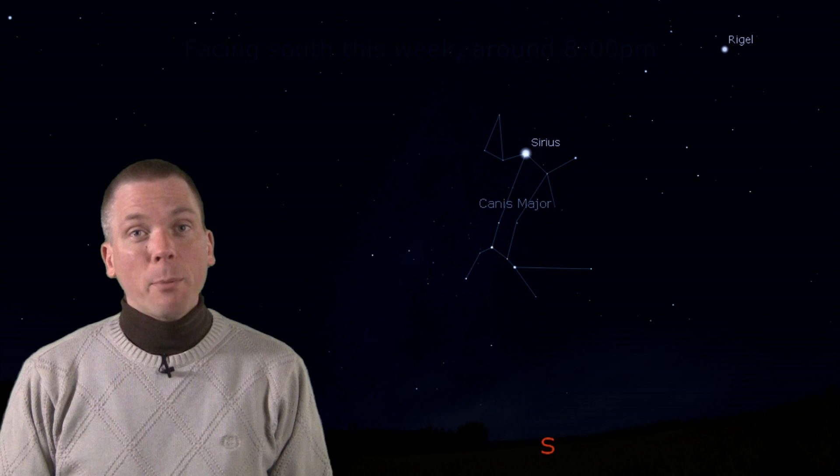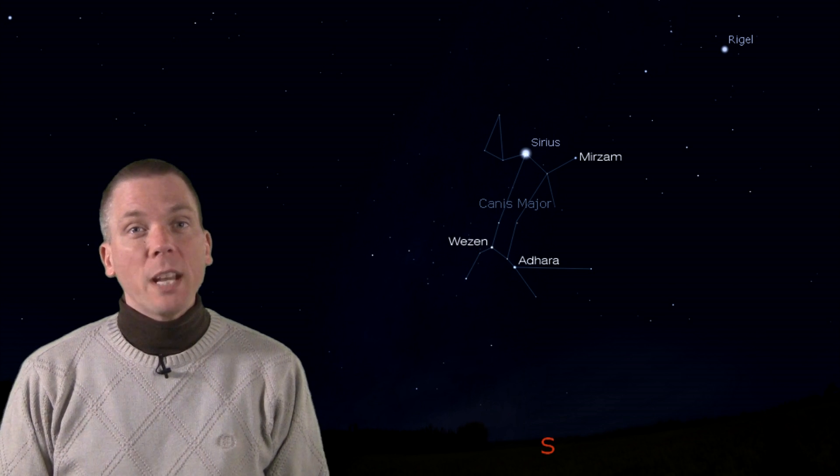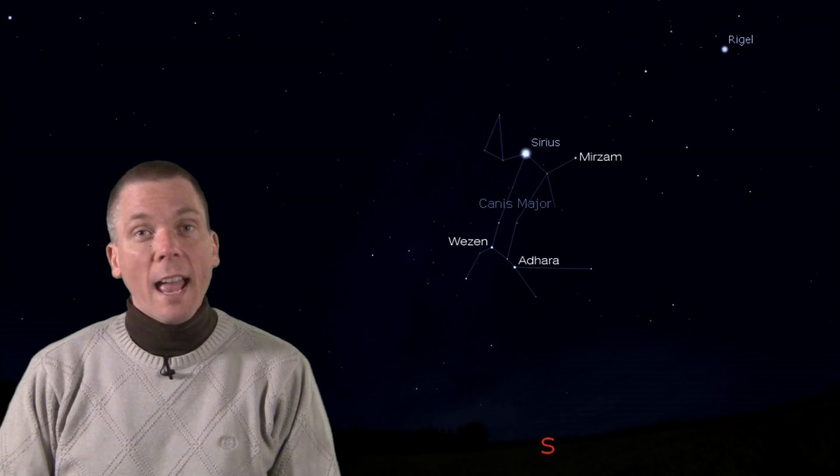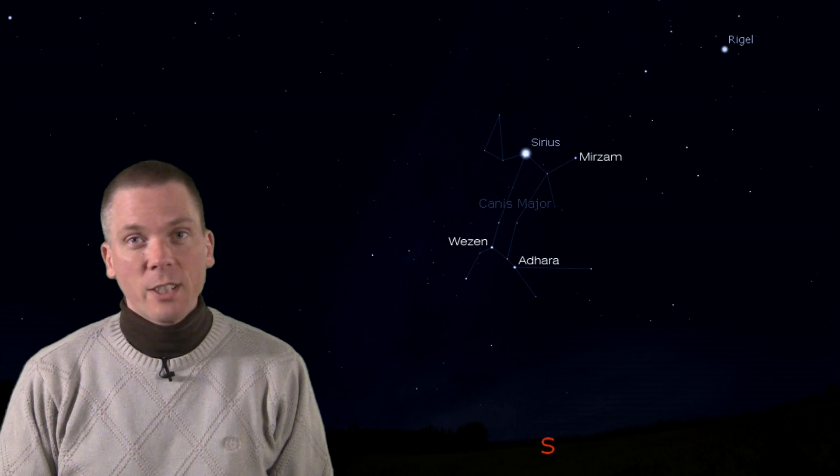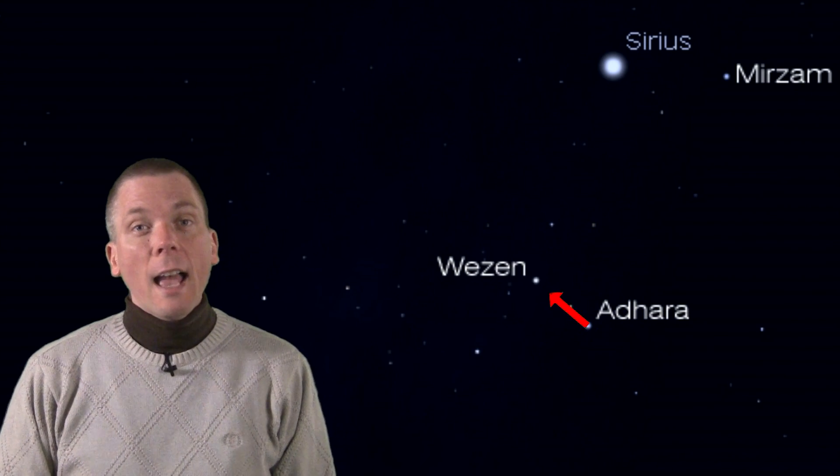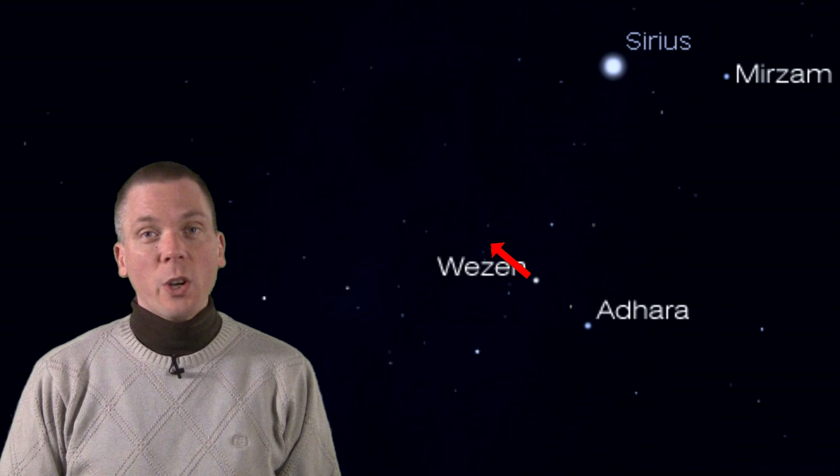There are several more moderately bright stars in this constellation, Mirzam to the west of Sirius and Adhara and Wezen to the south and slightly east. Draw a line from Adhara through Wezen and place it near the edge of a finderscope field of view.